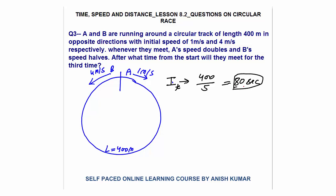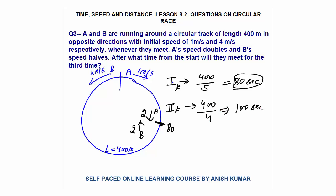After the first meeting at 80 seconds, A's speed doubles from 1 to 2, and B's speed halves from 4 to 2. They are again running in opposite direction with the gap of 400 meters. The relative speed is now 4, so the second meeting will take place 400/4 = 100 seconds after the first meeting.